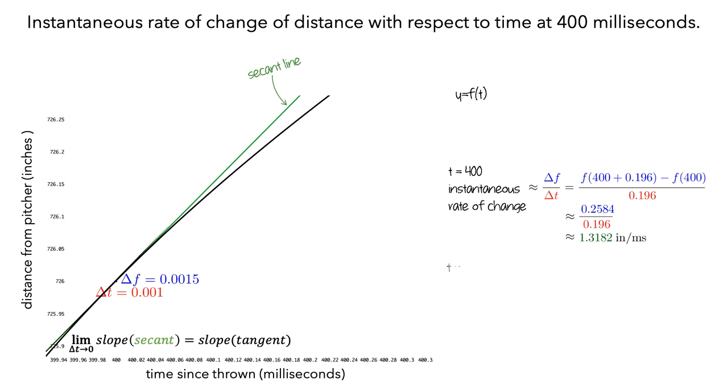So, at t equals 400, the instantaneous rate of change is the slope of the tangent line, which would be given by the limit as delta t approaches zero of the change in f over the change in t.